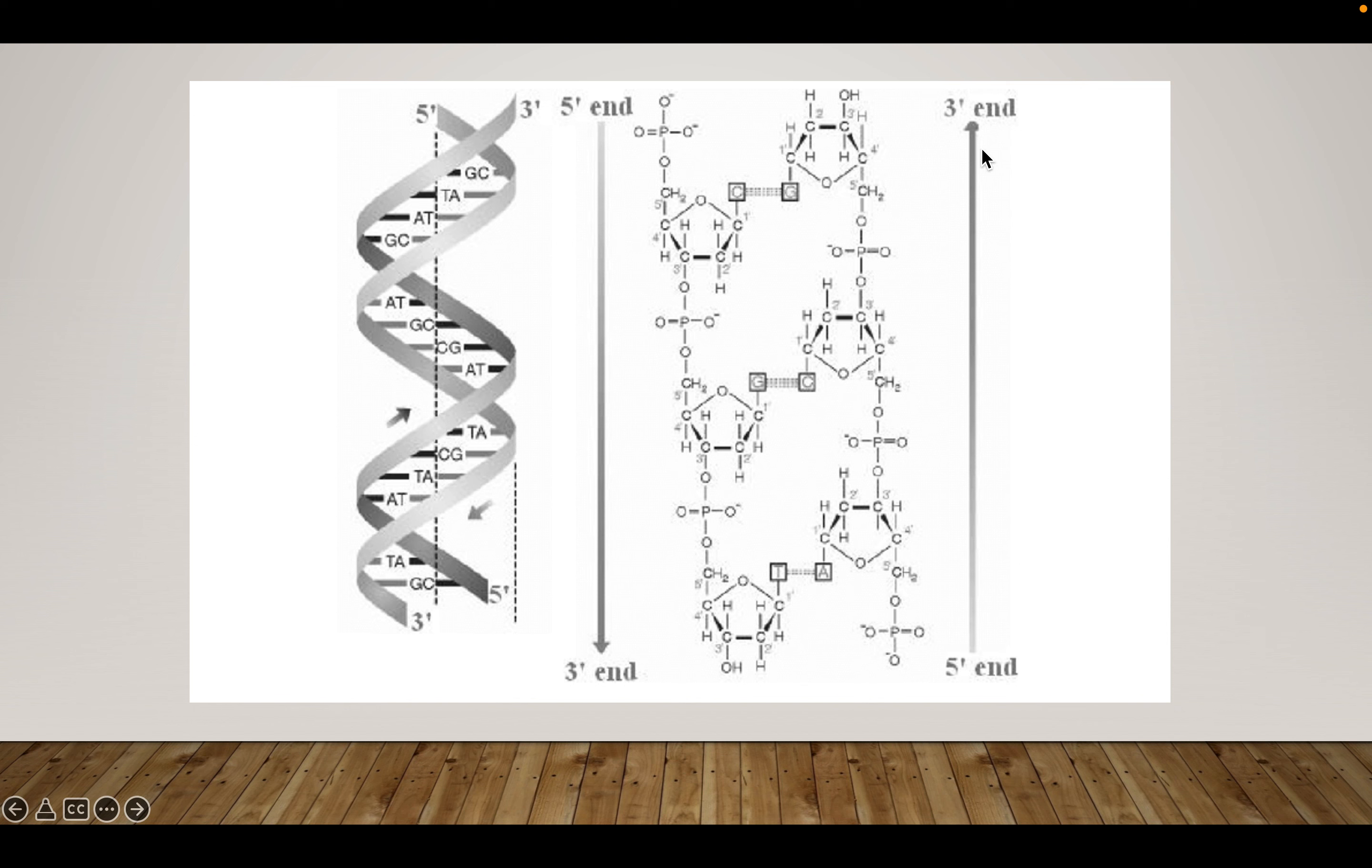This is important because certain enzymes, whenever you talk about DNA replication and protein synthesis, certain enzymes only move in one direction. They move in the three prime to five prime direction, and then whenever they lay down new bases for a new DNA strand or for mRNA, they lay it down in the five prime to three prime direction. So there's a directionality to DNA that's very important.